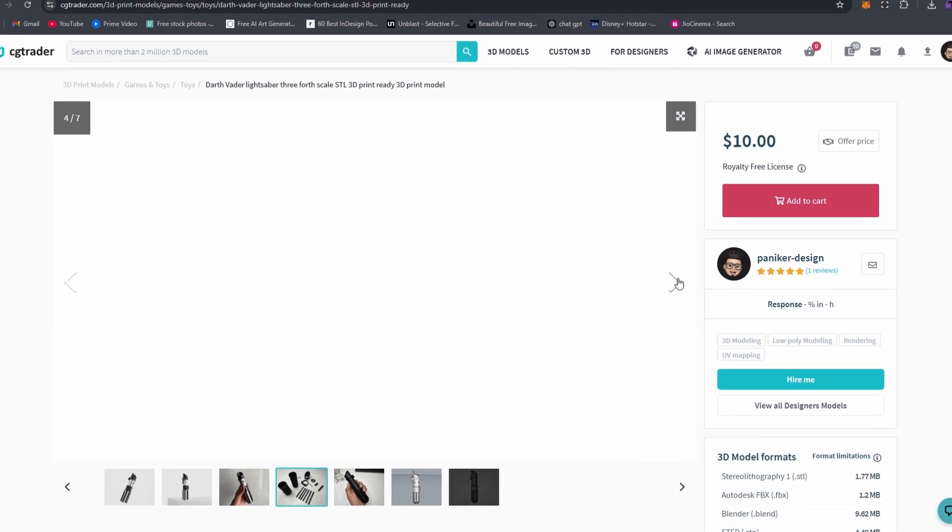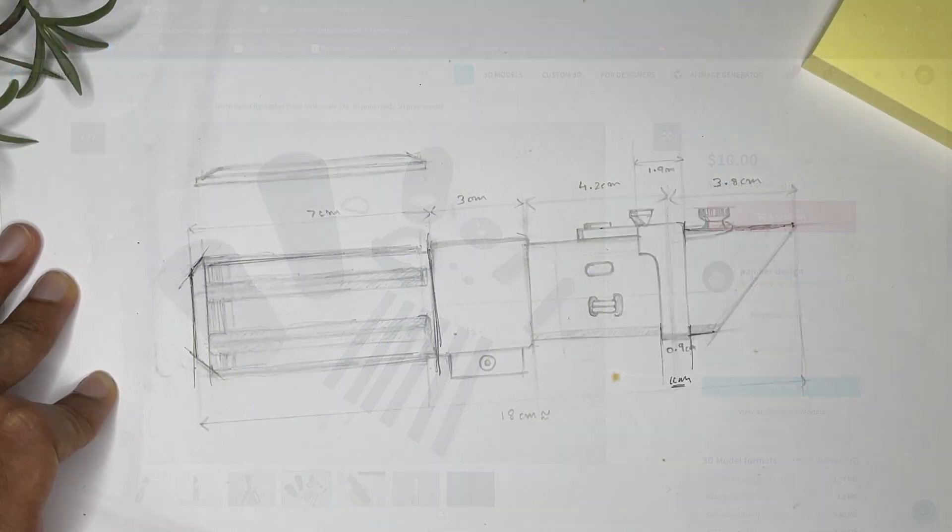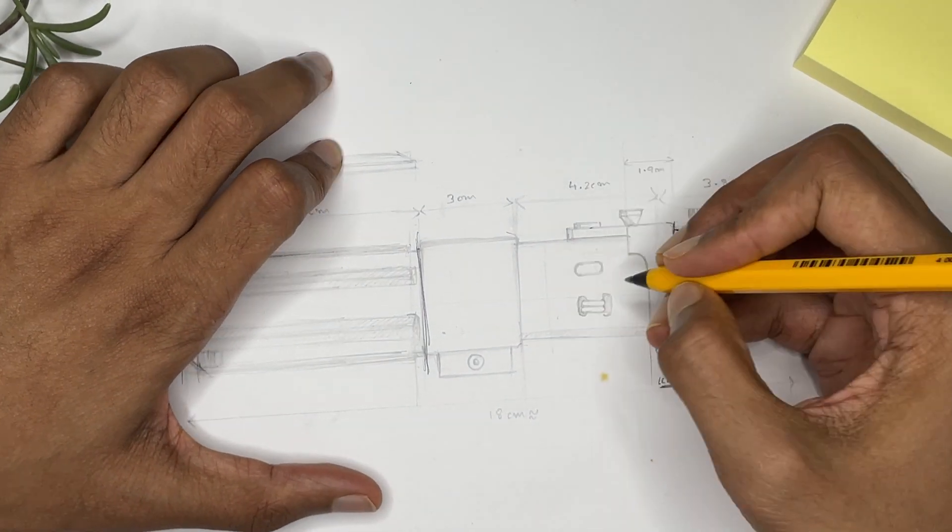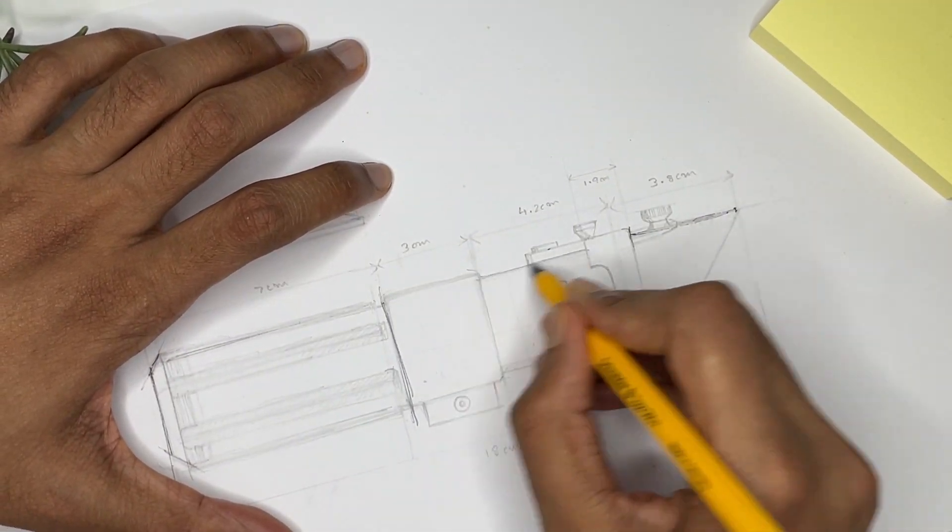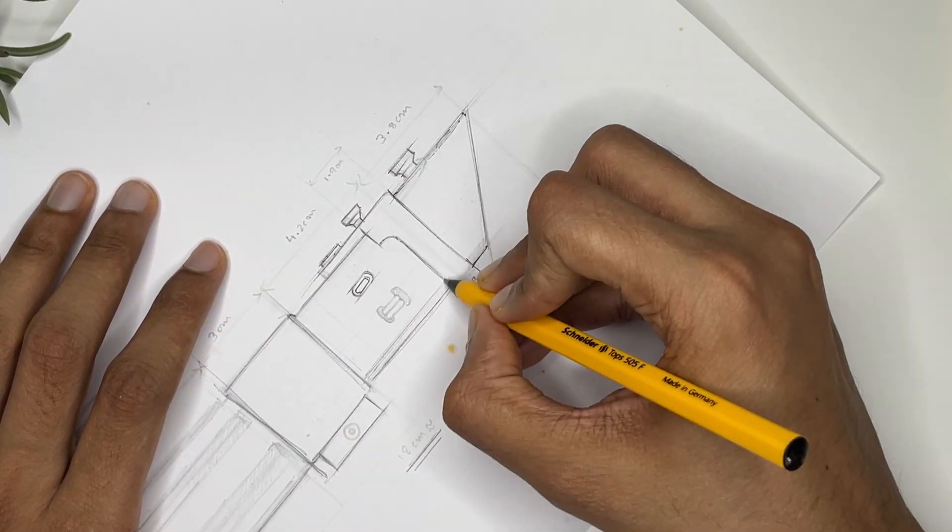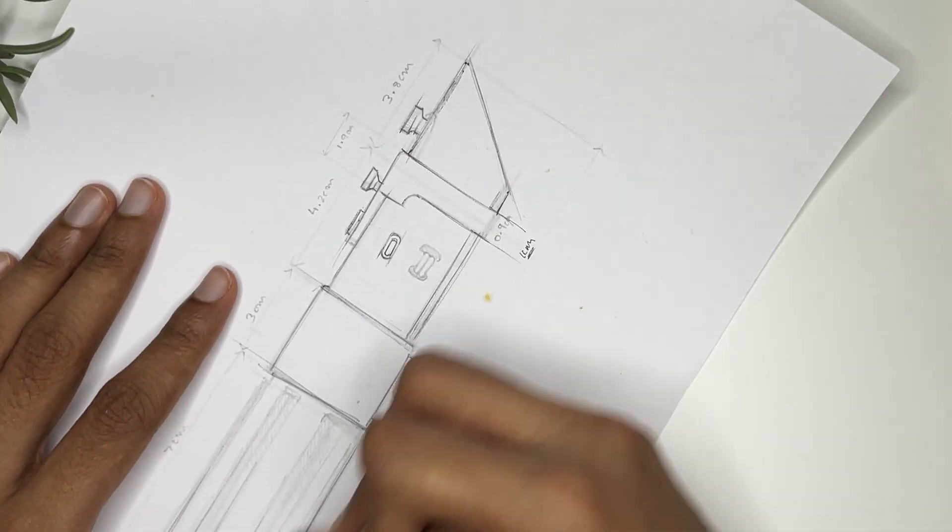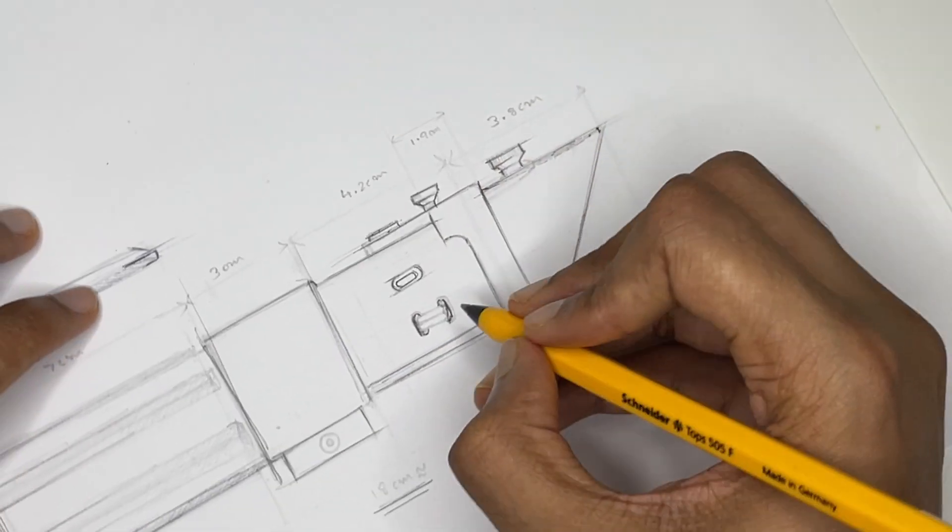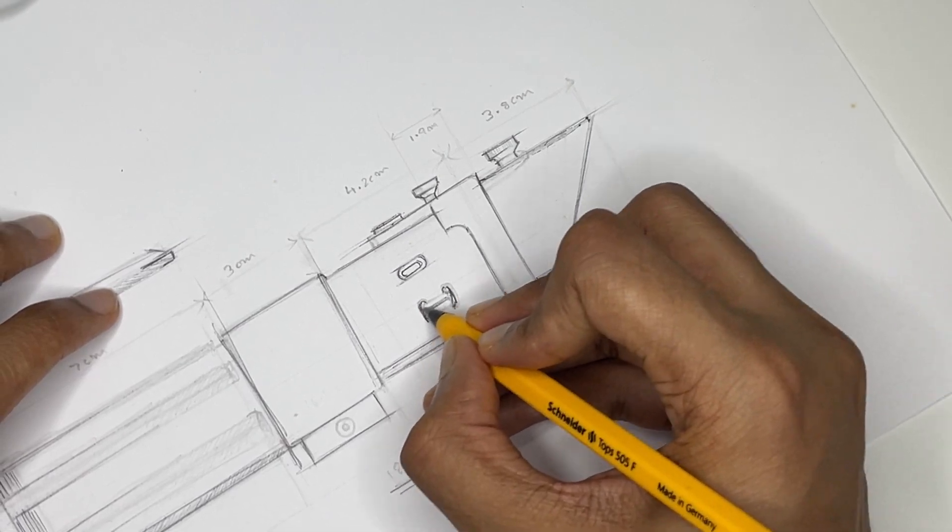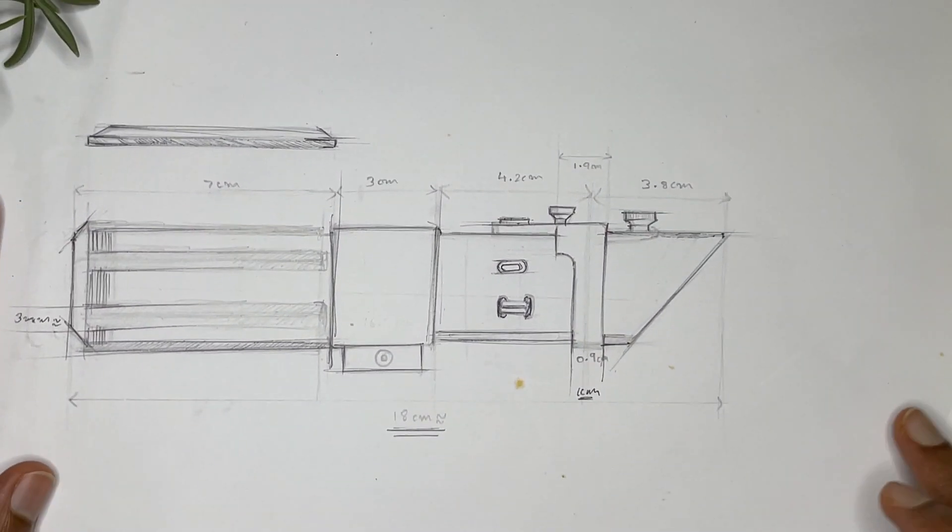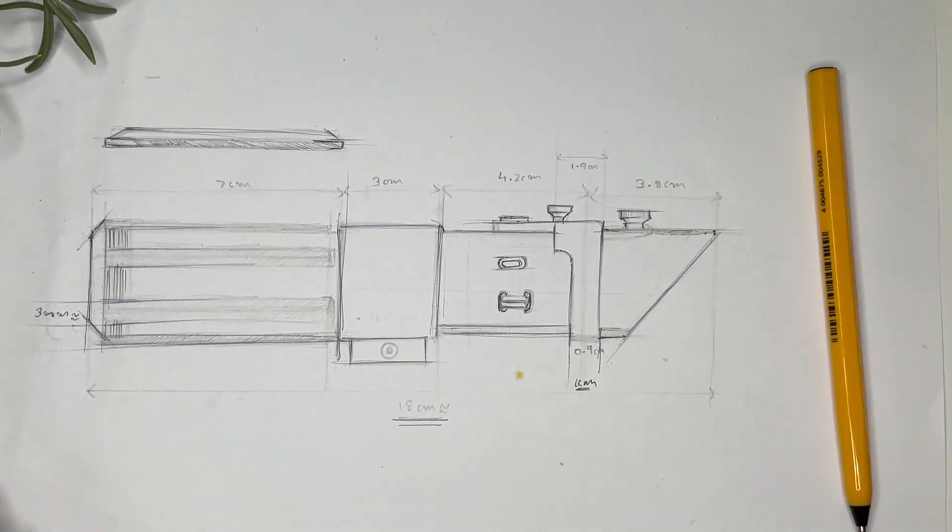So first I started off with a simple sketch of how big I wanted this model to be. Here I'm just going over the lines to make sure it's a little darker so that I can bring it over to my modeling software and begin modeling. I've mostly tried to keep it simple, keep the lines as minimal as possible.